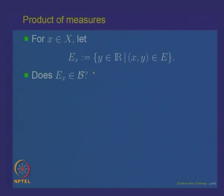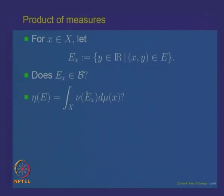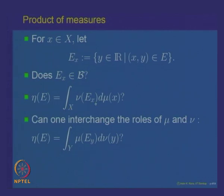The main questions formulated in the previous lecture were: can we say that the section E_x is an element in the sigma algebra B? If yes, then we can define nu(E_x), which depends on x, giving a function x mapping to nu(E_x). Is that function measurable? If it is measurable, we can define its integral with respect to mu and ask whether that equals the product measure mu cross nu of E. Similarly, can we interchange the roles of X and Y?